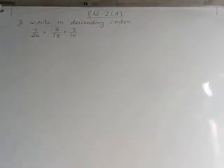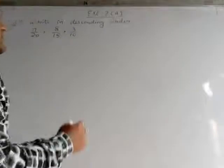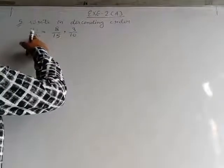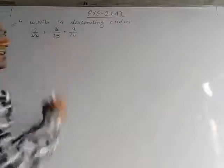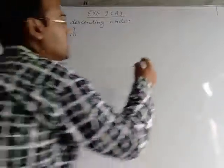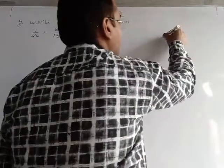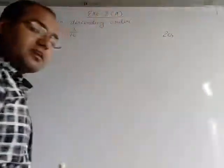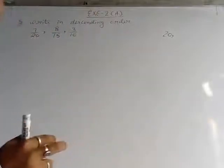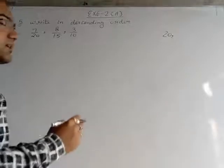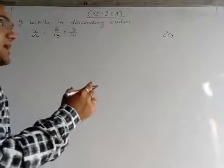So in order to arrange them in descending order, first of all what you have to do? In the denominator 20, 15 and 10 is written. We have to find the prime factor first. We will find the LCM of 20, 15, and 10. There are two methods: prime factorization method and division method. We will use the division method — that is the short method. It will not take that much time.